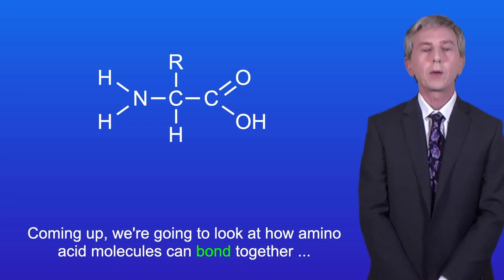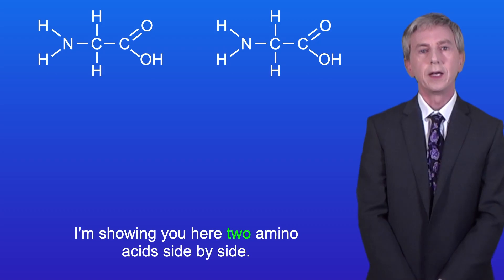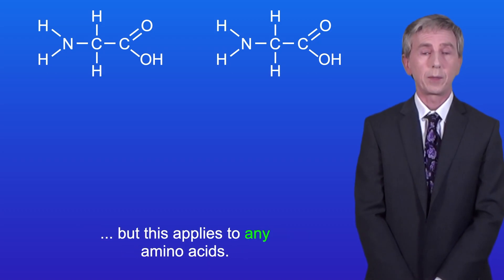Coming up we're going to look at how amino acid molecules can bond together by forming a peptide bond. I'm showing you here two amino acids side by side. In this case these amino acids are both glycine, but this applies to any amino acids.